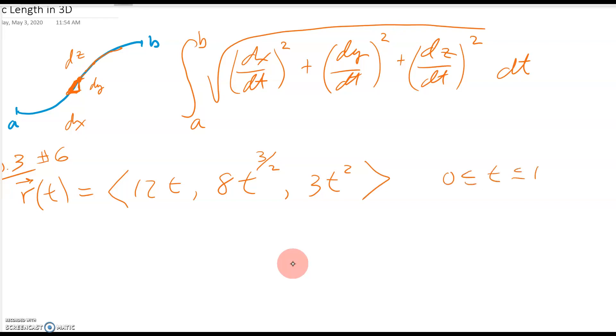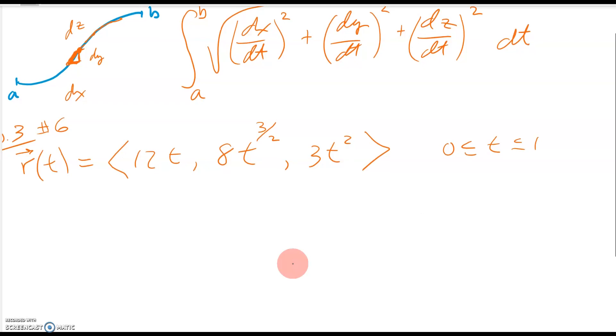Now this particular function has been cherry-picked so that if you plug it in and do it all by hand, it turns out to work out really nicely and things cancel and you end up with a nice number. But if you just randomly pick some function, it's not going to work out very nicely.